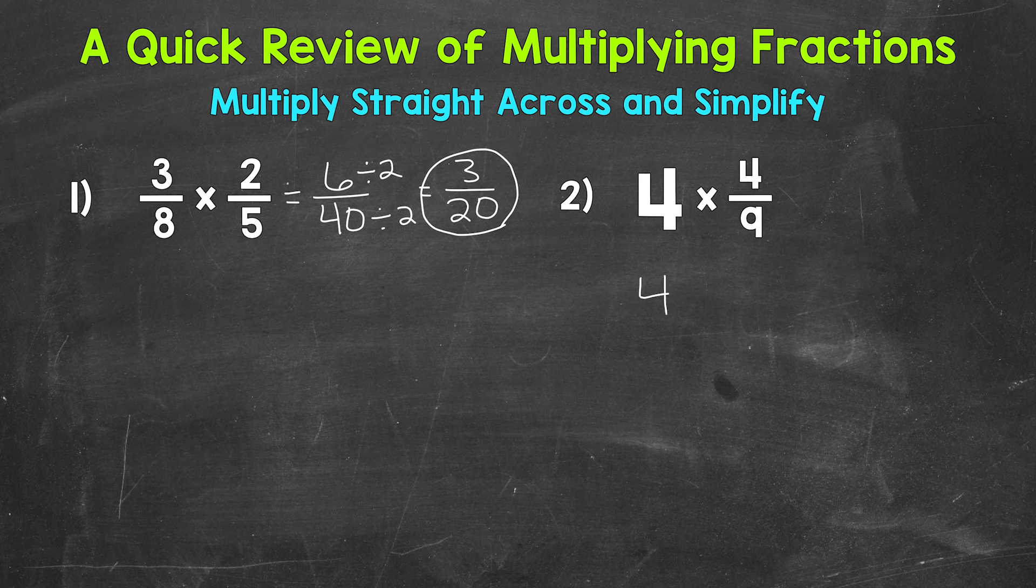So, let's rewrite this problem. 4 over 1 is 4. It has a value of 4. It's just in fractional form, and we want to do that. That way, we have a numerator and a denominator, and we can multiply straight across. Let's bring down our multiplication sign and the 4 ninths. Now, we can multiply straight across.